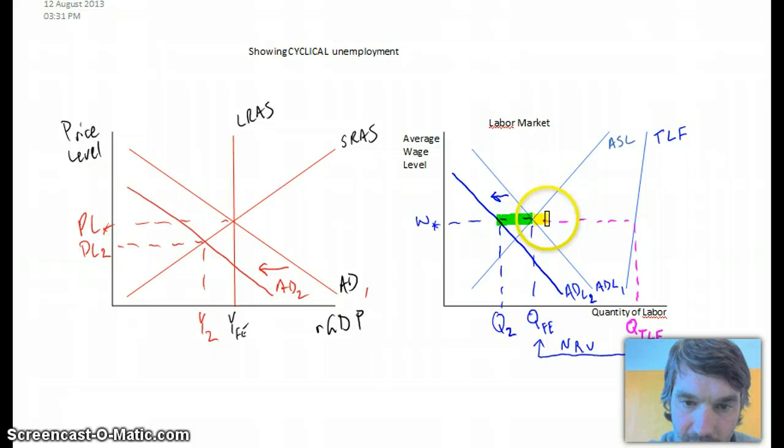Yellow, that was our NRU. NRU hasn't changed. We still have the same amount of people who are frictionally, seasonally, or structurally unemployed. But now we have additional unemployment that is what we see in green, and that's our cyclical unemployment.